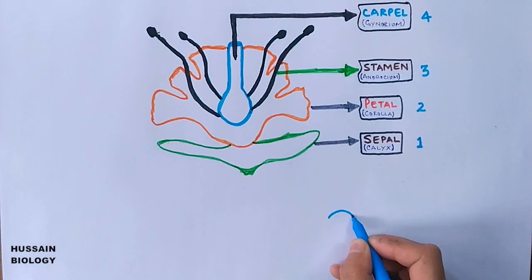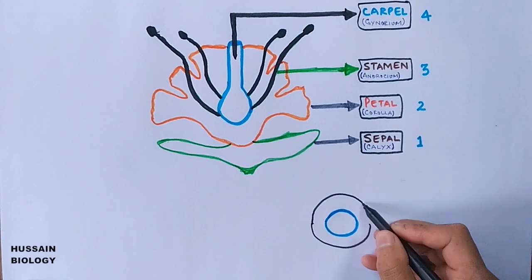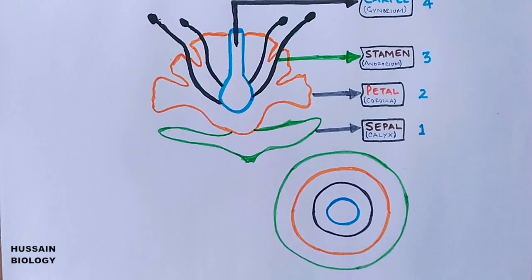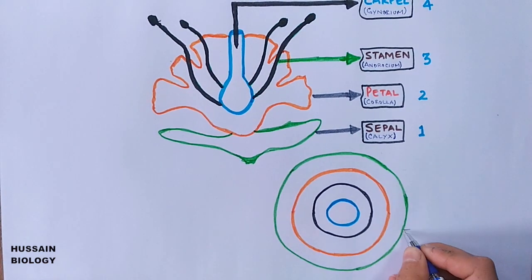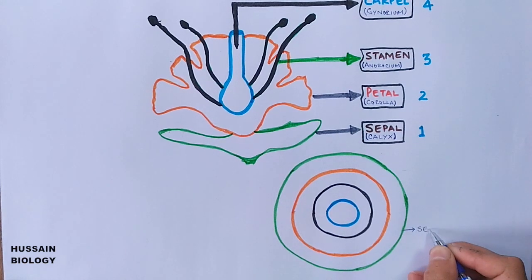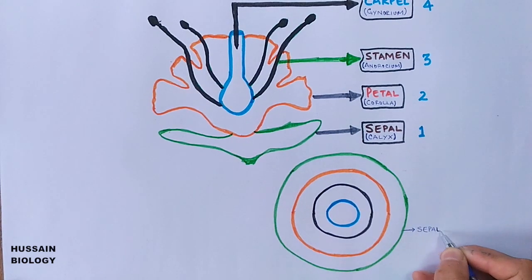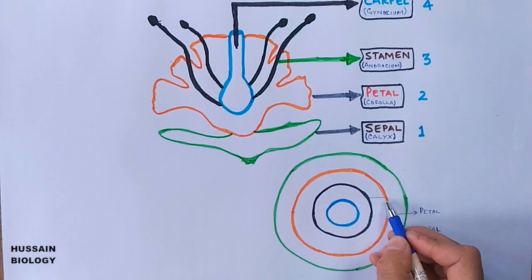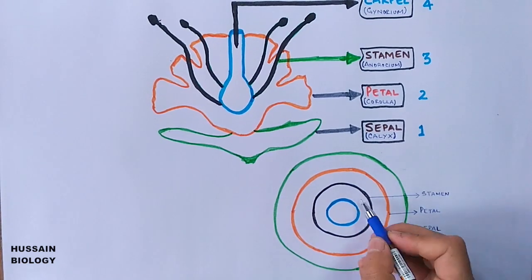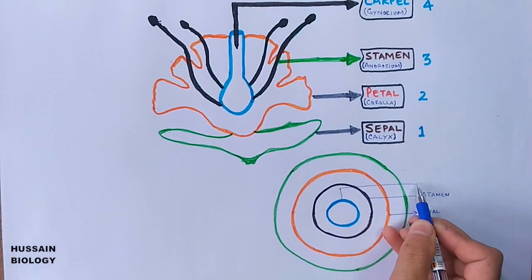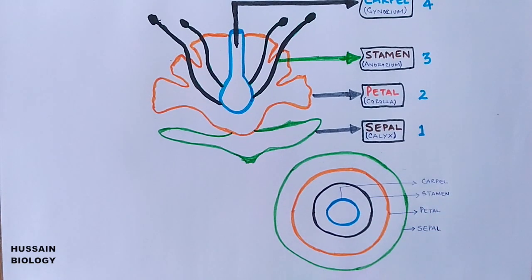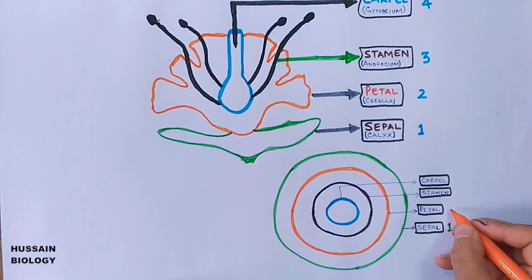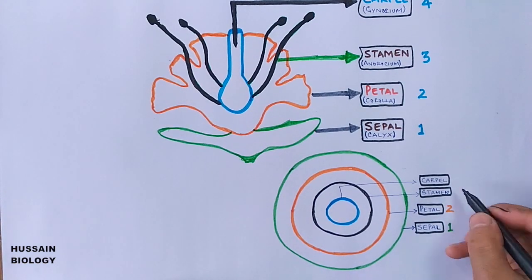We designate these parts as whorls 1 through 4 from outside to inside. To understand the floral diagram easily, we can draw the corresponding whorls as concentric rings. The outermost ring represents the first whorl — the sepal — followed by the second, third, and fourth whorls. This concentric ring diagram will be used later in this video for the illustration of the ABC model.